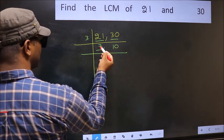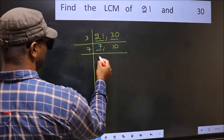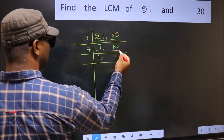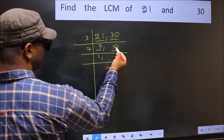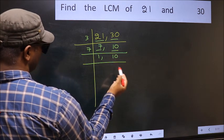Now, here we have 7. 7 is a prime number, so 7 times 1 equals 7. The other number 10 is not divisible by 7, so you write it down as it is.